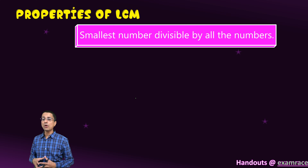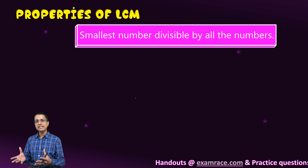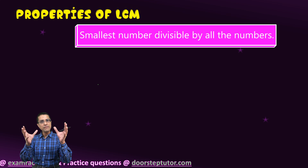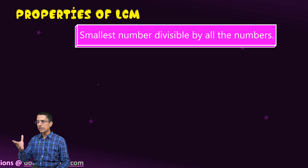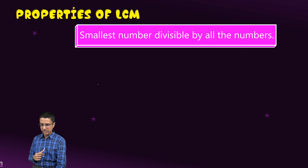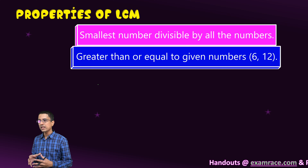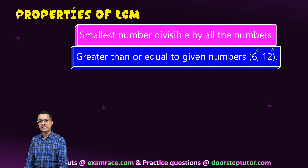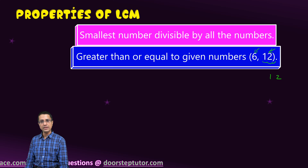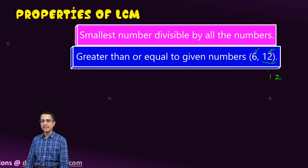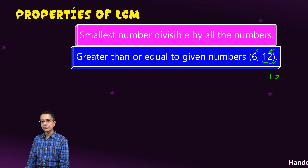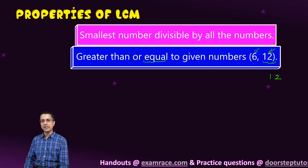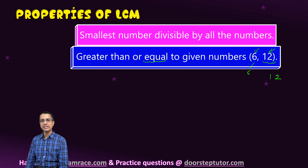Now let us look at the properties of the LCM. It is the smallest number divisible by all the numbers. Just by the process of finding the LCM, we have included the prime factors of each of the numbers, so the LCM must be divisible by each of them. The LCM is always greater than or equal to the given numbers. For example, the LCM of 6 and 12 is 12 — which is greater than 6 and equal to 12. The HCF in this case would have been 6.